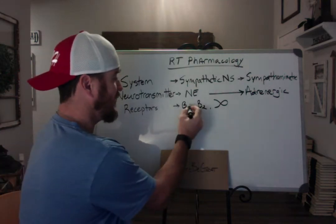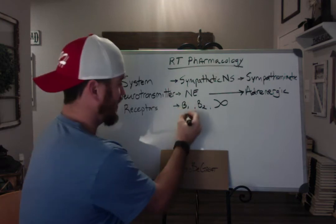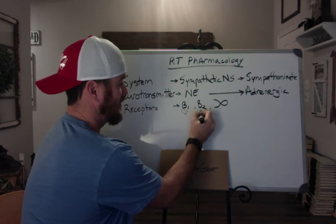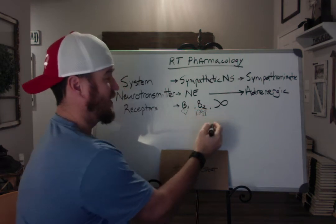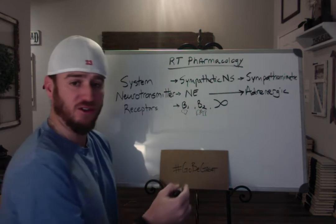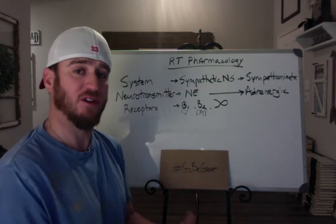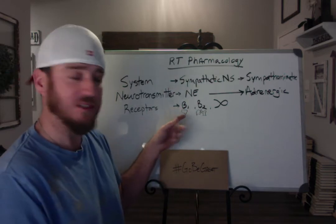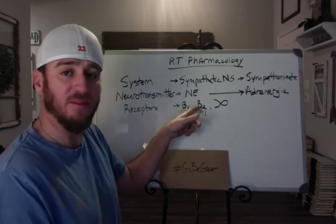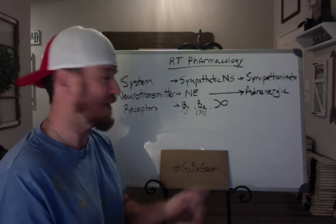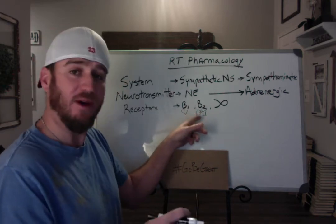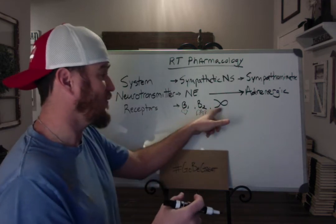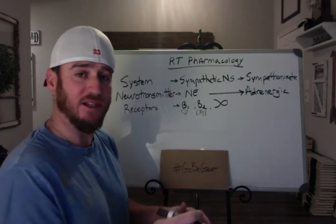If you remember that you have one heart and two lungs, that'll help you. Beta-1 affects your heart — it causes tachycardia, increased blood pressure, and increased contractility of the ventricles. That's the effect of beta-1s. Beta-2 receptors are responsible for smooth muscle relaxation, so we're talking about airway relaxation in the lungs associated with the smooth muscles.